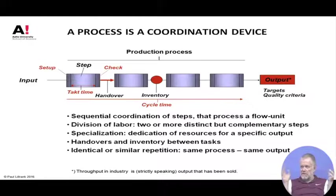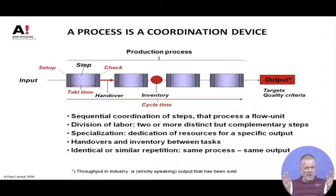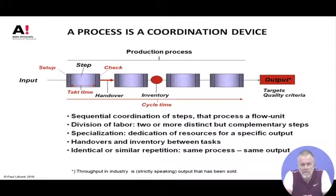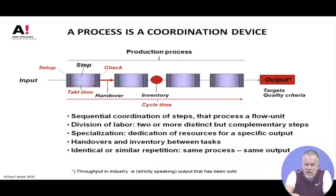A process doesn't exist in the world — it's an abstract concept. In the world you see things happening and not happening; the process is a sort of intellectual frame you use to understand what's happening in more precise ways so you can take measures and identify different parts. A typical production process is a sequential sequence of steps — you have discrete steps that are more or less specialized, and they happen in a certain order.